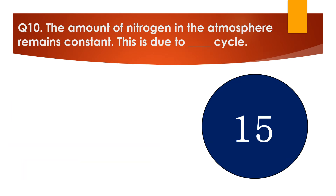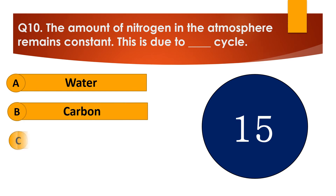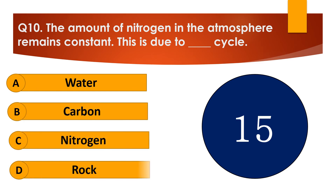Question number 10. The amount of nitrogen in the atmosphere remains constant. This is due to the dash cycle. The options are: A. Water, B. Carbon, C. Nitrogen, or D. Rock.